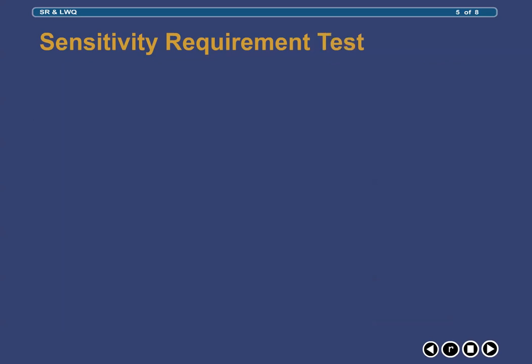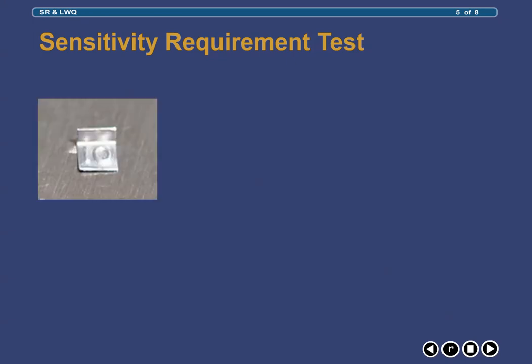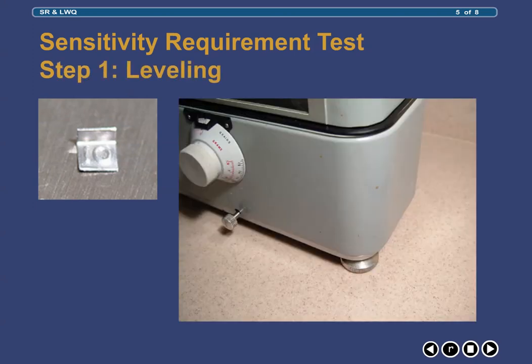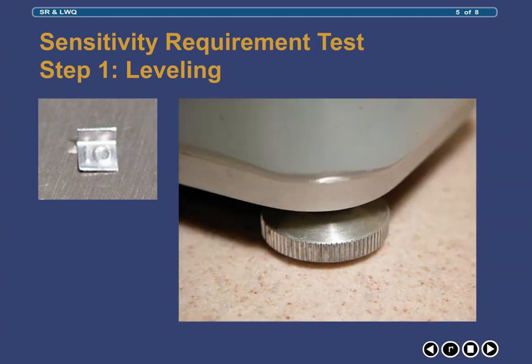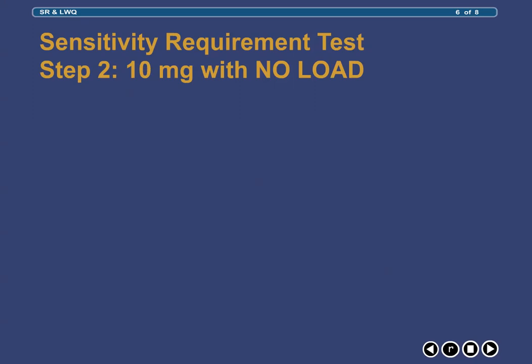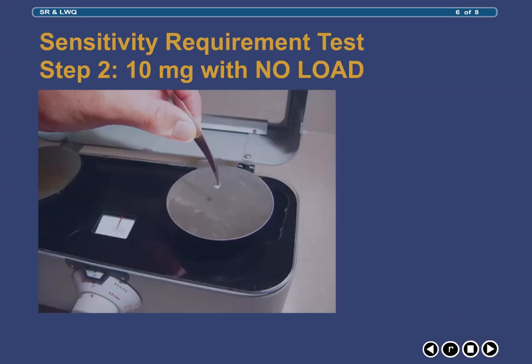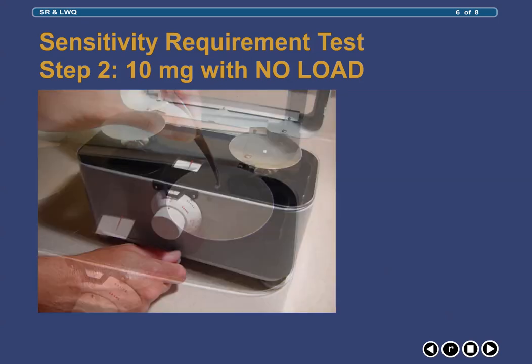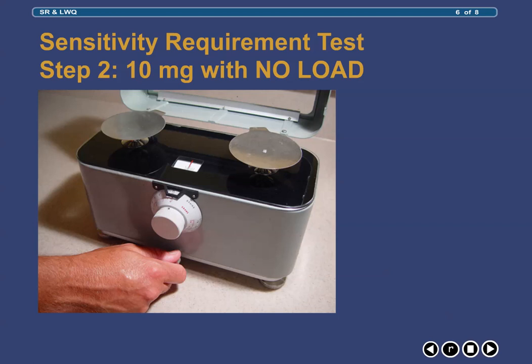In order to ensure that your balance conforms to the accepted sensitivity guidelines, you can easily perform a simple sensitivity requirement test utilizing a 10 mg weight. The first step in this test is ensuring that your balance is level by rotating the leveling screws at the base of the balance until the long center mark on the scale is in alignment with the pointer. Once you have ensured that your balance is level, you should then place a 10 mg weight on one of the empty pans, then release the locking arm so the pans move freely.